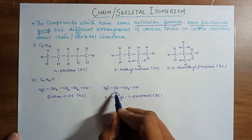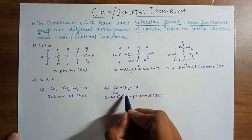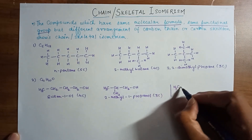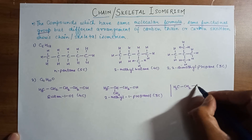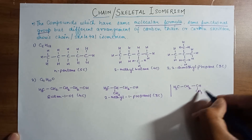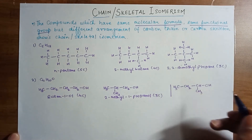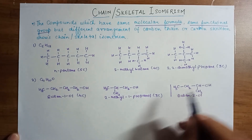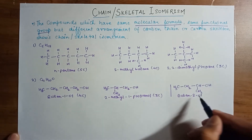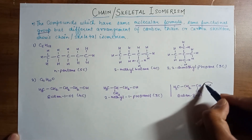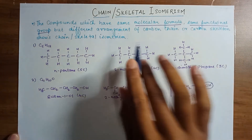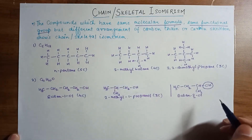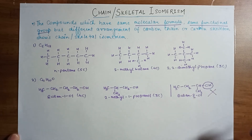You might have a doubt about what happens if we move the CH3 group to a different carbon. If we do that, we get butan-2-ol. But notice that by doing so, we are only changing the position of the functional group, not the carbon chain itself. According to the definition of chain or skeletal isomerism, the carbon chain must vary — not the functional group position. So butan-2-ol cannot be considered a chain isomer of butan-1-ol; that would be positional isomerism.